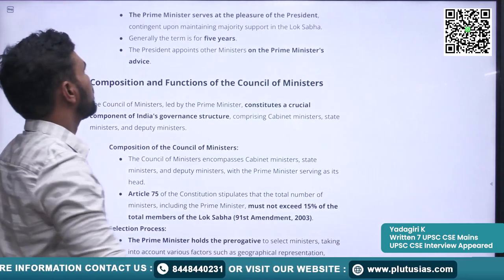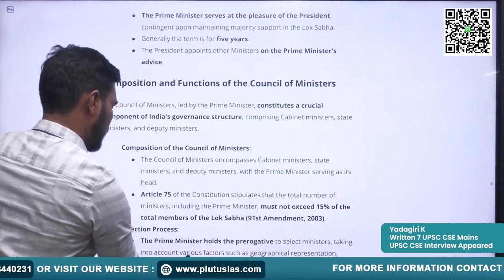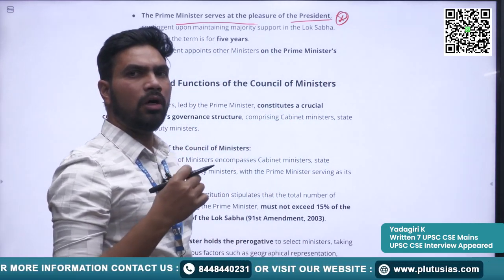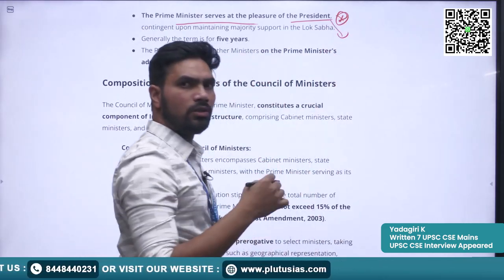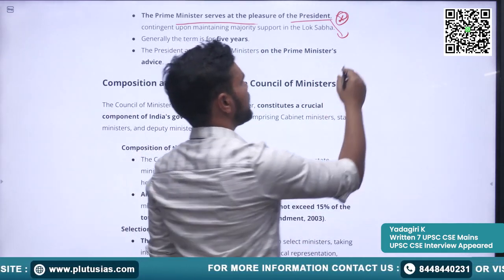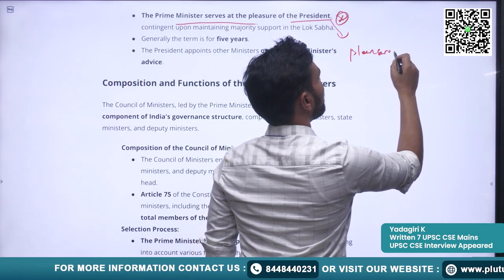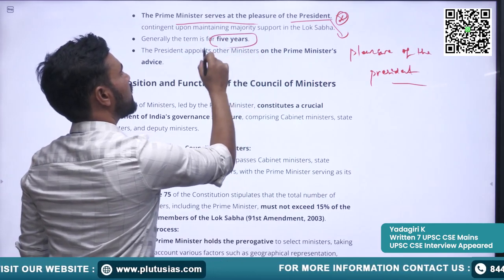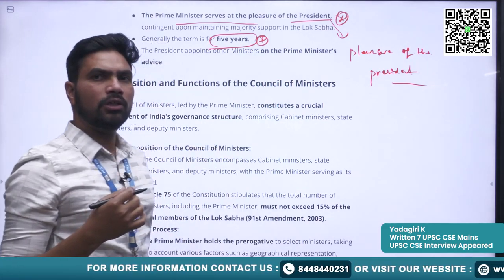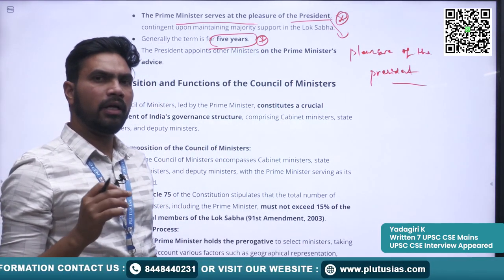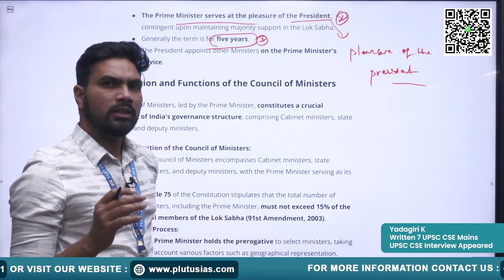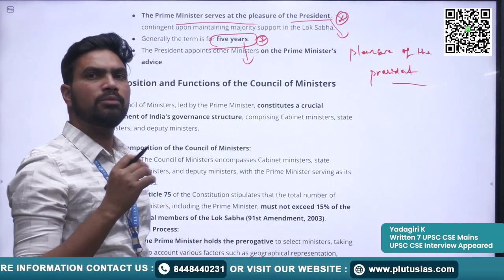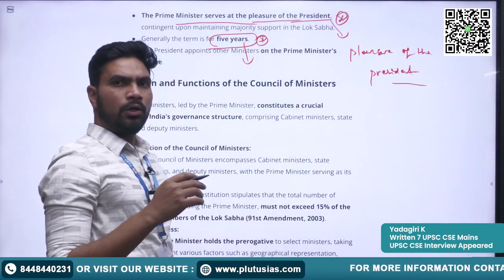Regarding the tenure of the Prime Minister, the Constitution states that the Prime Minister serves during the pleasure of the President — please try to remember this phrase, 'pleasure of the President.' A particular fixed tenure is not mentioned in the Constitution. Generally in practice, the tenure is five years, as general elections must be held every five years. So in practice the tenure comes to five years, but the constitutional theory is that the Prime Minister serves during the pleasure of the President.